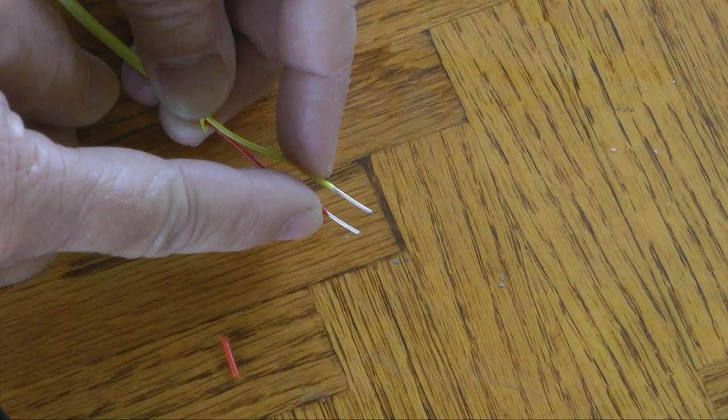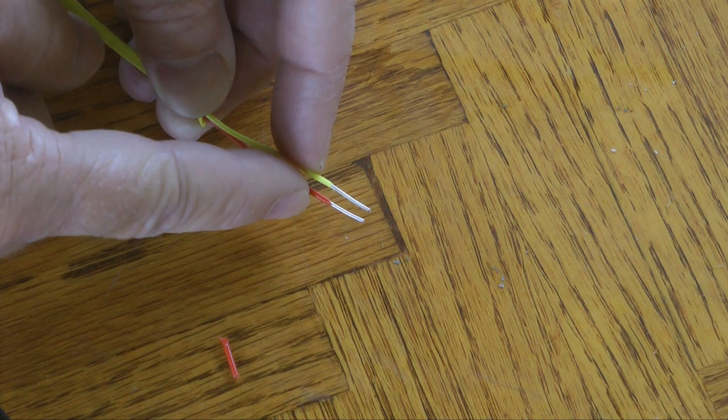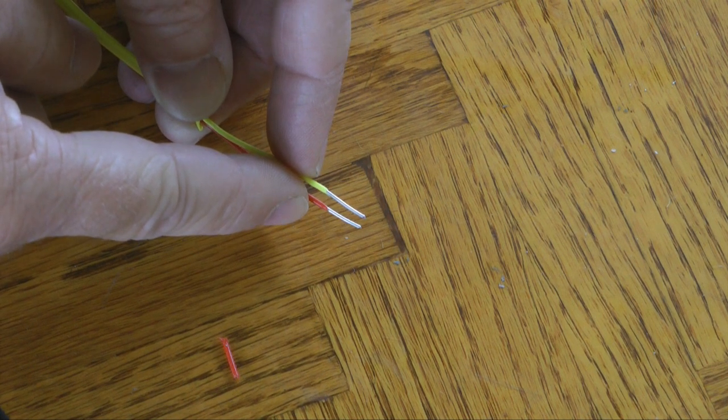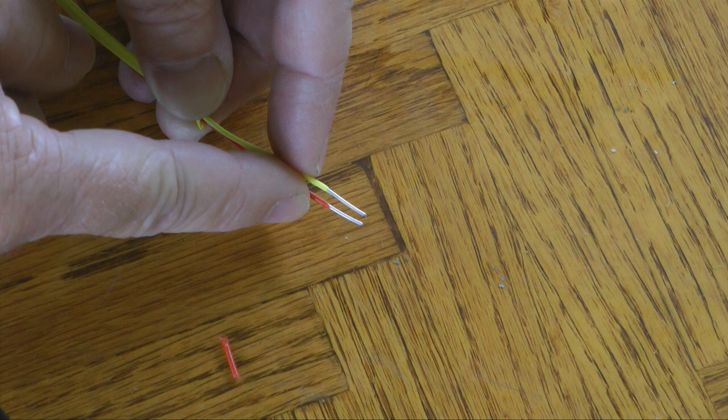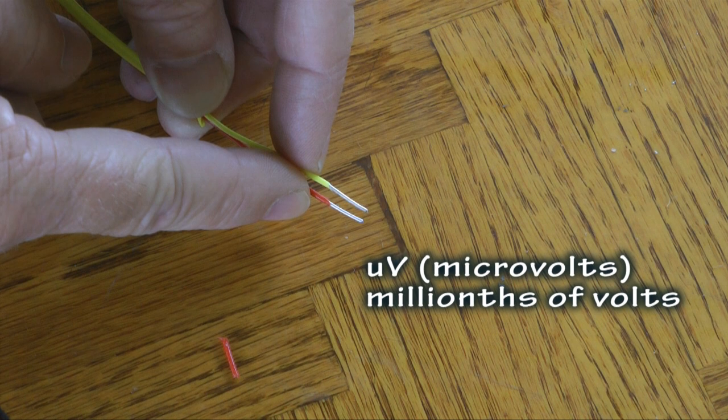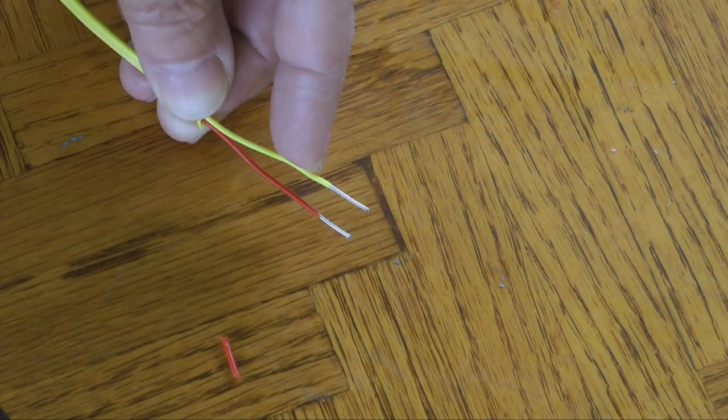That is the basis of thermocouples. That is the thermocouple, the junction of two dissimilar metals. And then by measuring the voltage that is induced, the tiny voltage, we can figure out what the temperature is at that junction.